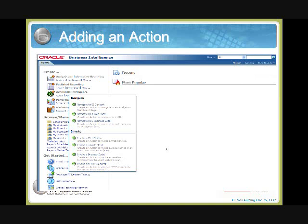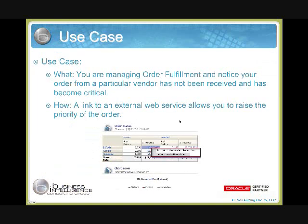There are hundreds of different cases where you can leverage the Action Framework. Here's another example: you're looking at a fulfillment order and notice that an order has not been received from a particular vendor, and the item is now critical. Based on the Action Framework, you can set up a link to send it to an external web service to increase the priority of that order and get it in much sooner.